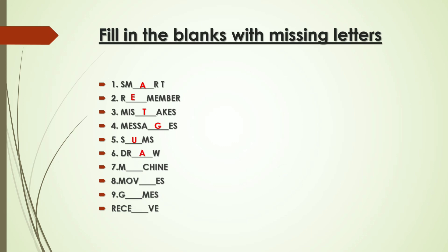Seventh one — what is the word? It is 'machine' — the missing letter is A. Eighth one, 'movies' — the missing letter is I. Tenth one, 'games' — the missing letter is A. Last one is 'receive' — the missing letter is I.